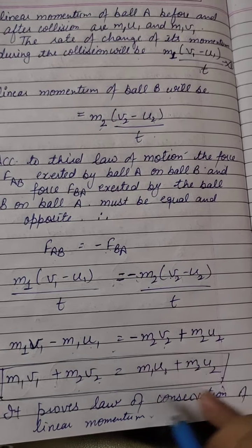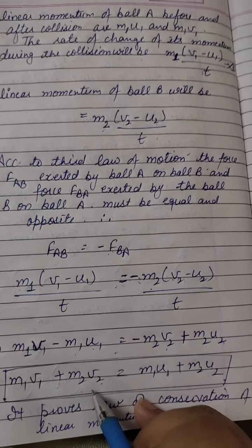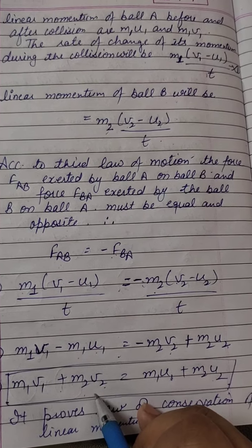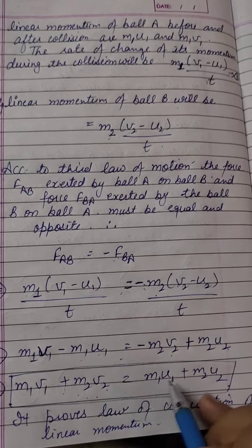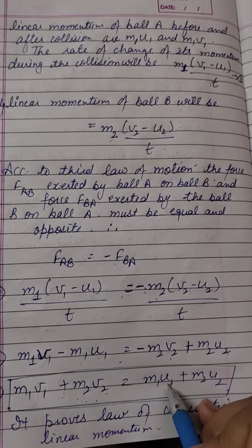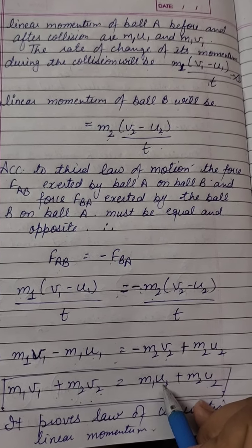What is the meaning? This is the initial linear momentum and this is the final linear momentum. When we have bodies with no external force applied, momentum will not change. So what do we say? Law of conservation of linear momentum.